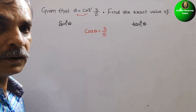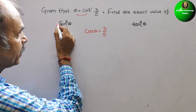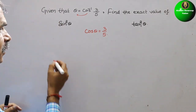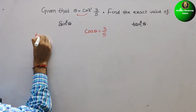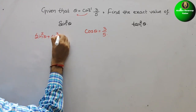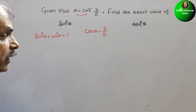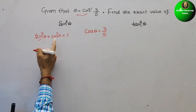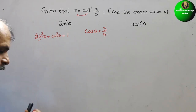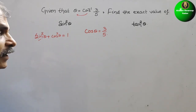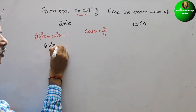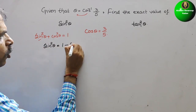Now, they have told us to find out sine square theta. We know the one identity — that is nothing but sine square theta plus cos square theta is equal to 1. They have asked this, that is equal to 1 minus cos square theta. So we will simply write here: sine square theta is equal to 1 minus cos square theta.